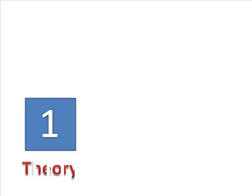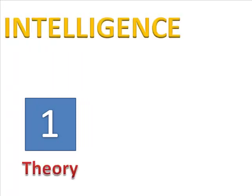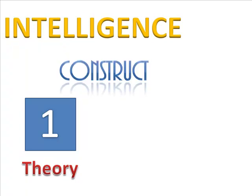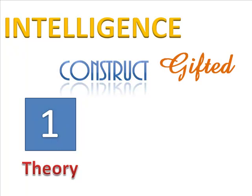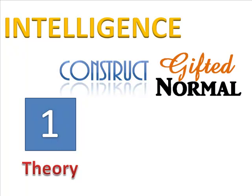At square one, you construct a theory. You build it out of constructs, ideas. Your theory is a collection of ideas. Let's pretend you have a theory of intelligence. One portion of that theory is the construct, the belief, that people vary in intelligence — that is, you can see the difference between highly intelligent and normally intelligent people.